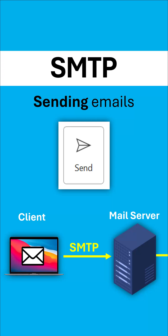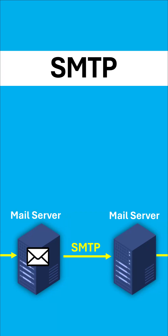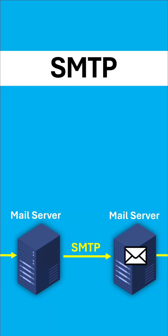The first mail server it goes to is the mail server belonging to the company I have for my emails. This gets transferred to their server first of all. And then to transfer it to the destination, my mail server needs to transfer it to the mail server of my recipient. And SMTP does that transfer as well.